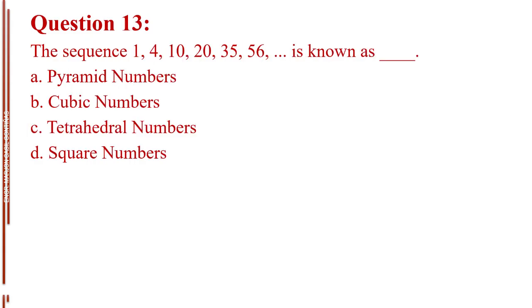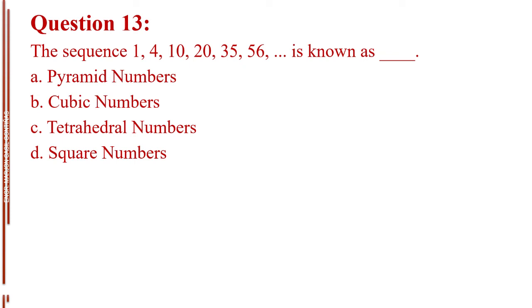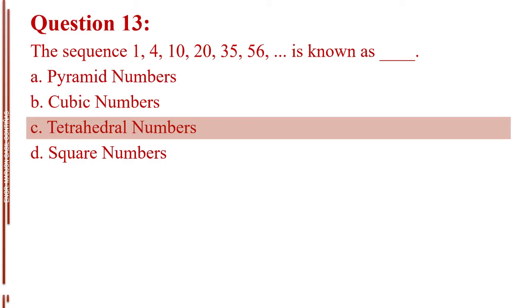Question number thirteen. The sequence 1, 4, 10, 20, 35, 56, and so on, is known as blank. Letter A, pyramid numbers. Letter B, cubic numbers. Letter C, tetrahedral numbers. Letter D, square numbers. The answer is Letter C, tetrahedral numbers.